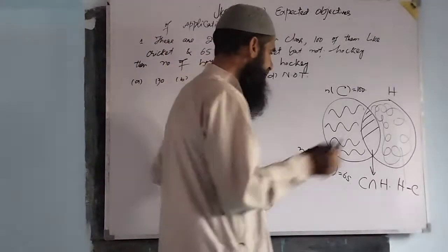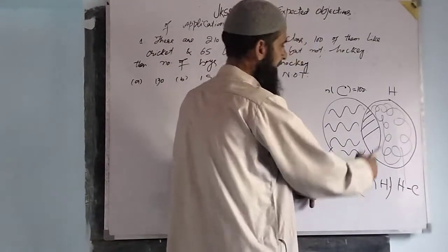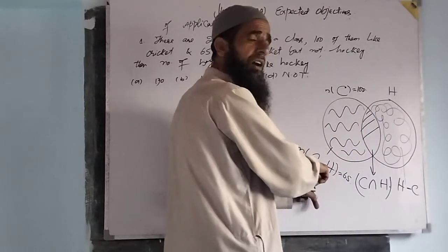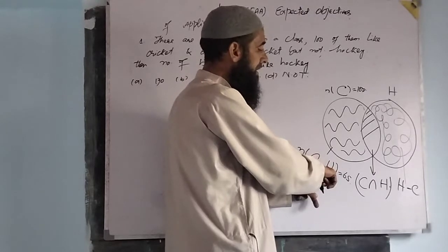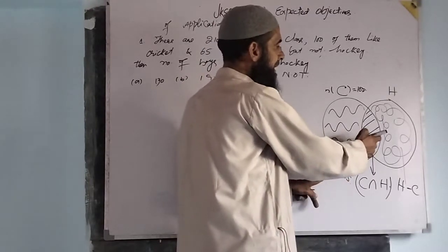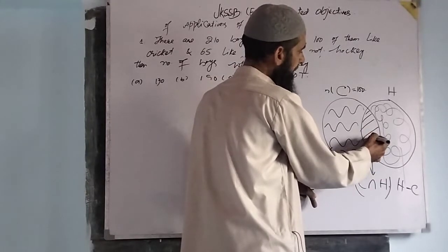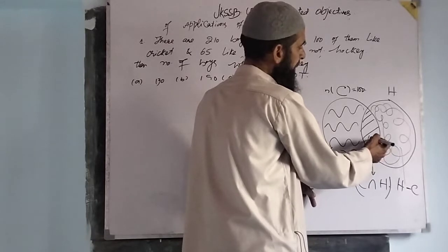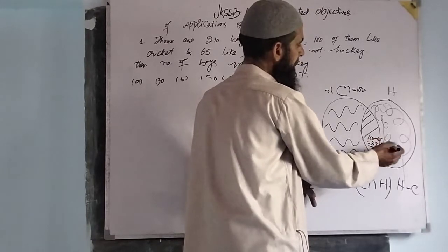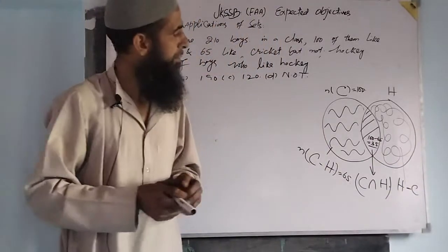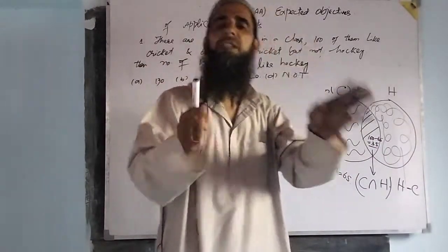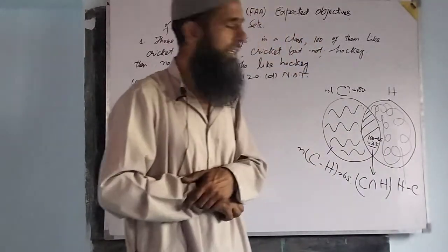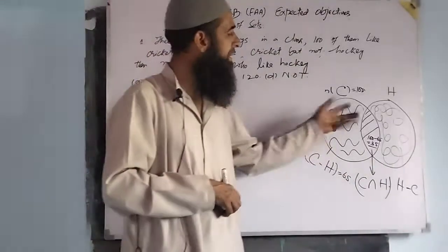This is the number of boys who like cricket. From 100, we subtract 65, so we have 35 elements in the intersection set. In the intersection set, the total number of boys who like cricket as well as hockey is 35. Ye cheez aap easily calculate kar sakte hain.